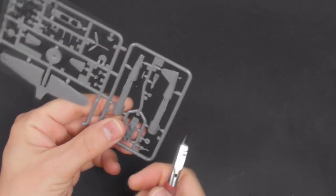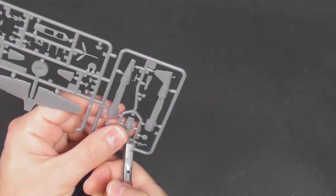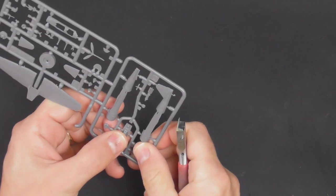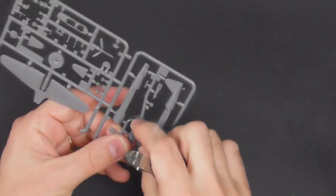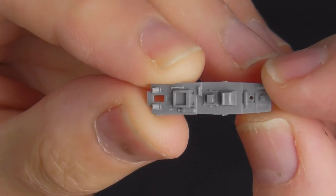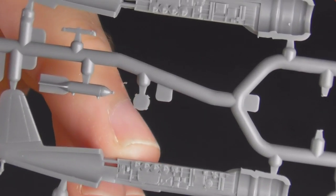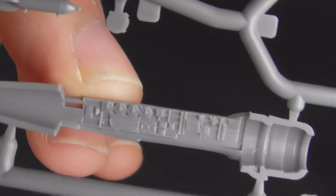Hello and welcome back to the Scale Modeling Cafe and welcome to part two of the Clearprop Ki-51 Sonya in 1:144 scale. Now a little bit different with this video, it's going to be the entire project. It's only a little small kit so why not?